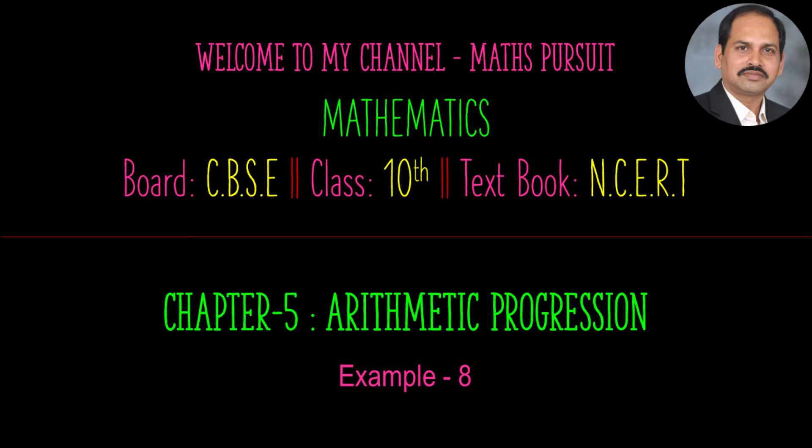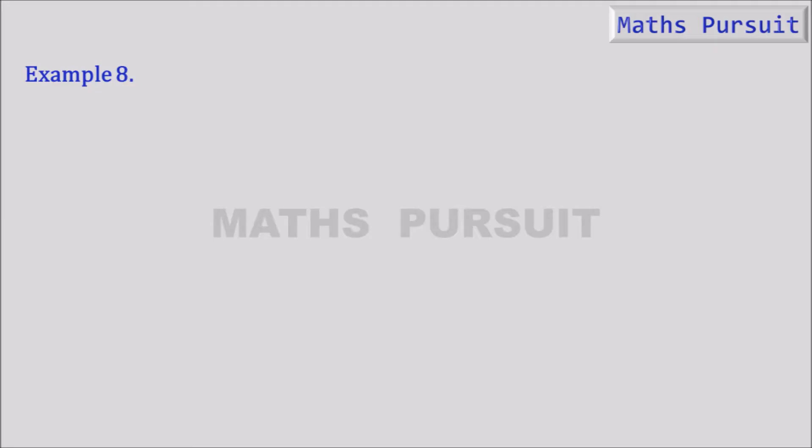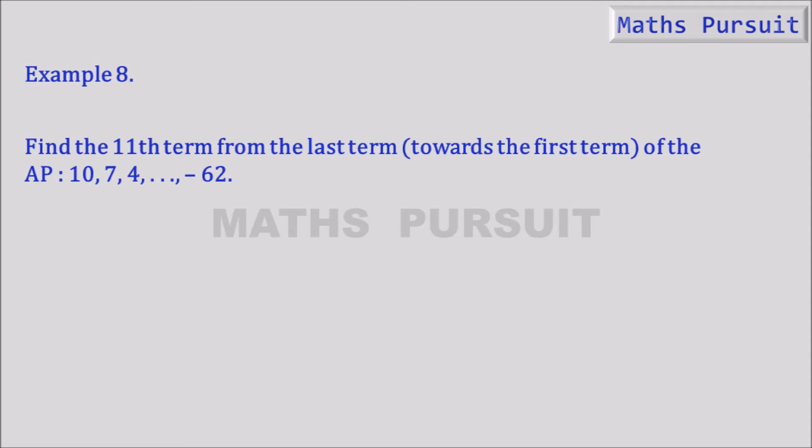So let's see what exactly is given in example 8. Now coming to example 8, it is given that find the 11th term from the last term towards the first term of the AP: 10, 7, 4, ..., -62.